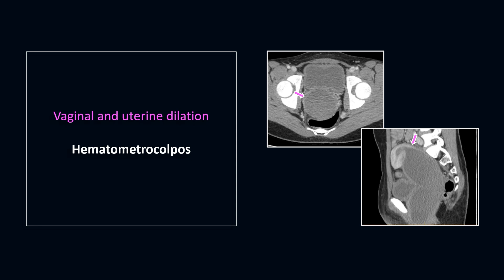In neonates, this presents as a pelvic or abdominal mass with or without imperforate anus, esophageal and duodenal atresia, and congenital heart disease. In adolescent girls, this presents as pelvic mass or pain and blood in the vagina due to physiological hormonal stimulation. On MR, the fluid is usually low signal on T1 and high on T2. But if there are hemorrhagic contents, the fluid is high on T1. There can also be hydronephrosis from ureteral compression in long-standing obstruction.